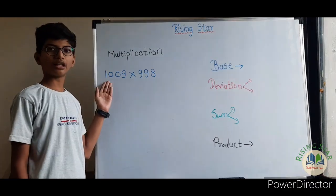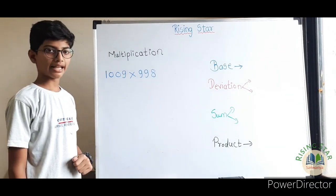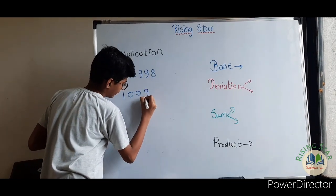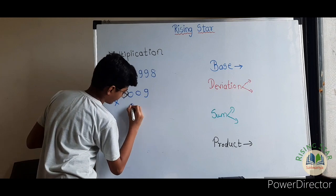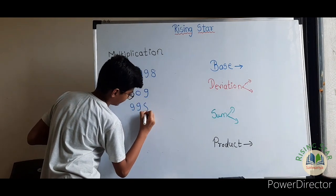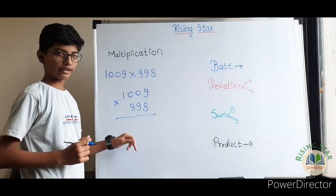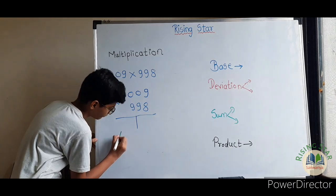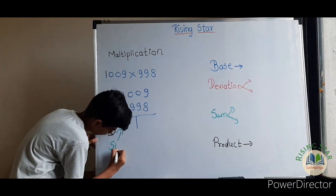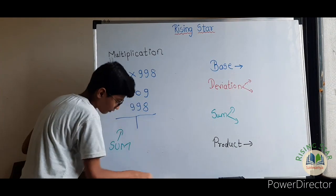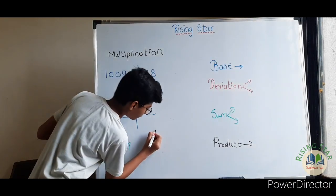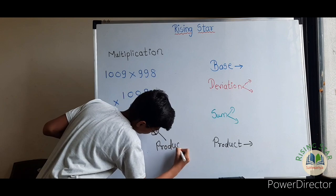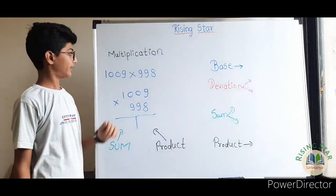Let's begin with the next example. We have taken 1009 into 998. So just write it: 1009 into 998. First of all, draw a line here, write 'sum' here, and write 'product' here.